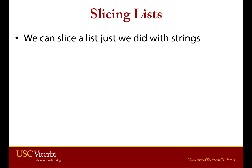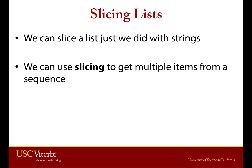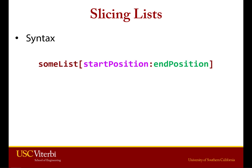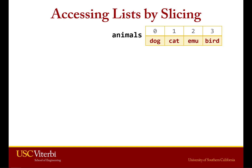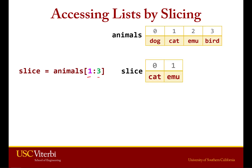Another cool feature of lists is that we can slice them. Just like we did with strings, we can essentially create a sub-list — a partial version of a list. Slicing allows us to take multiple items from a sequence, and the syntax is similar to strings: the name of the list, bracket, the starting position, the ending position — but not including. So for example, we have a list of animals: dog, cat, emu, bird. If I grab a slice from 1 to 3, that gives me cat and emu, starting at position 1, going up to but not including 3. It returns that new list into the slice variable.